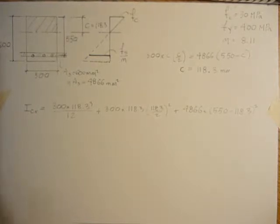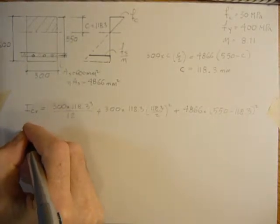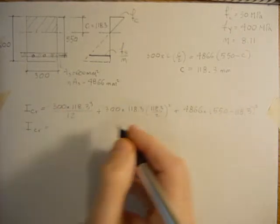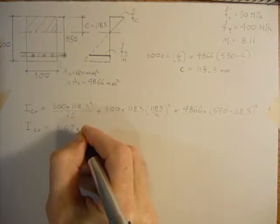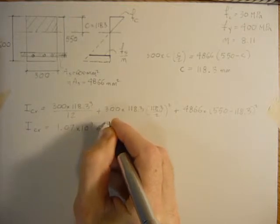So we'll go back to home mode, and then 300 times 118.3 cubed divided by 12, plus 300 times 118.3 times 118.3 over 2 squared, plus 4866 times 550 minus 118.3 squared. So the cracking moment of inertia, when I punch this all out, comes up to 1.07 times 10 to the 9th millimeters to the 4th.